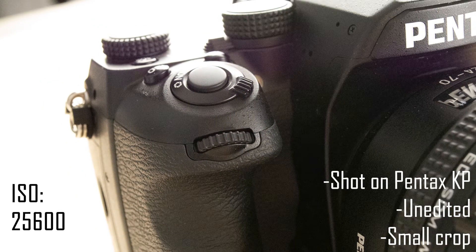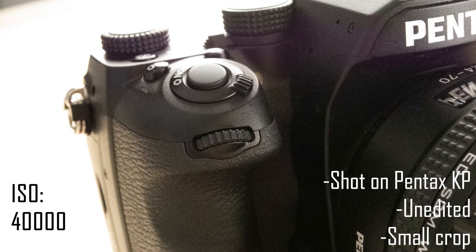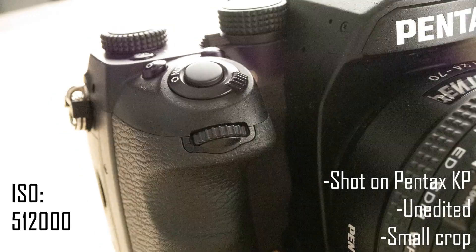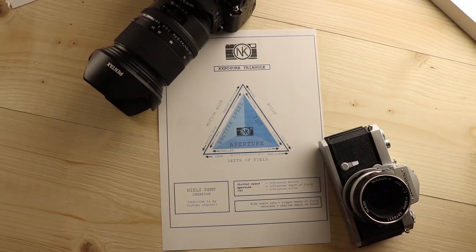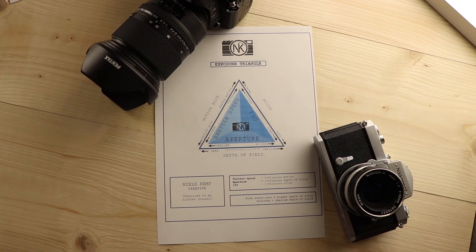A small side note: be careful when zooming in on a big screen because you will always see some noise. When you print your photo, however, the noise will probably be a lot more acceptable. Personally I don't mind a little noise. I also made a document about the exposure triangle — you can download it via the link below. It's very handy to remember all the things I'm explaining. You can put it in your camera bag or hang it on the wall.